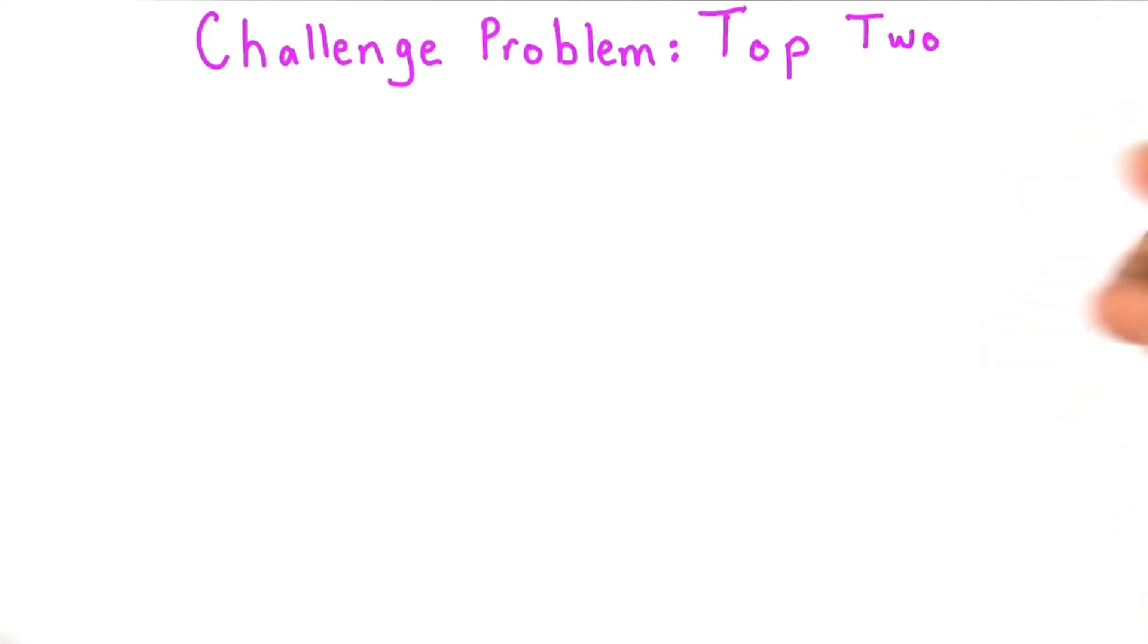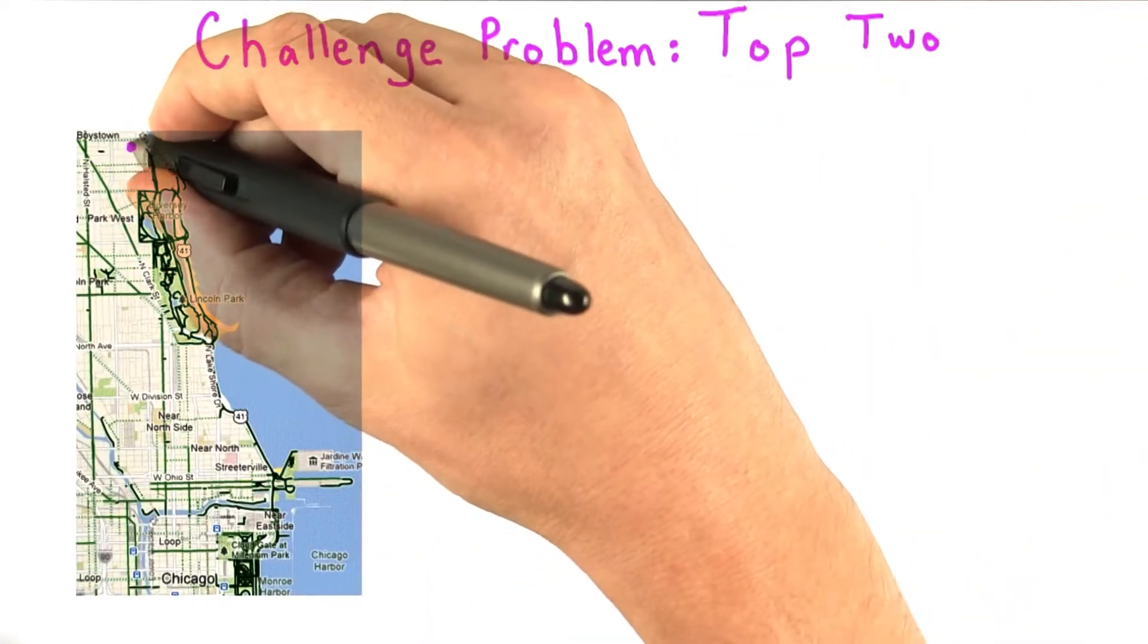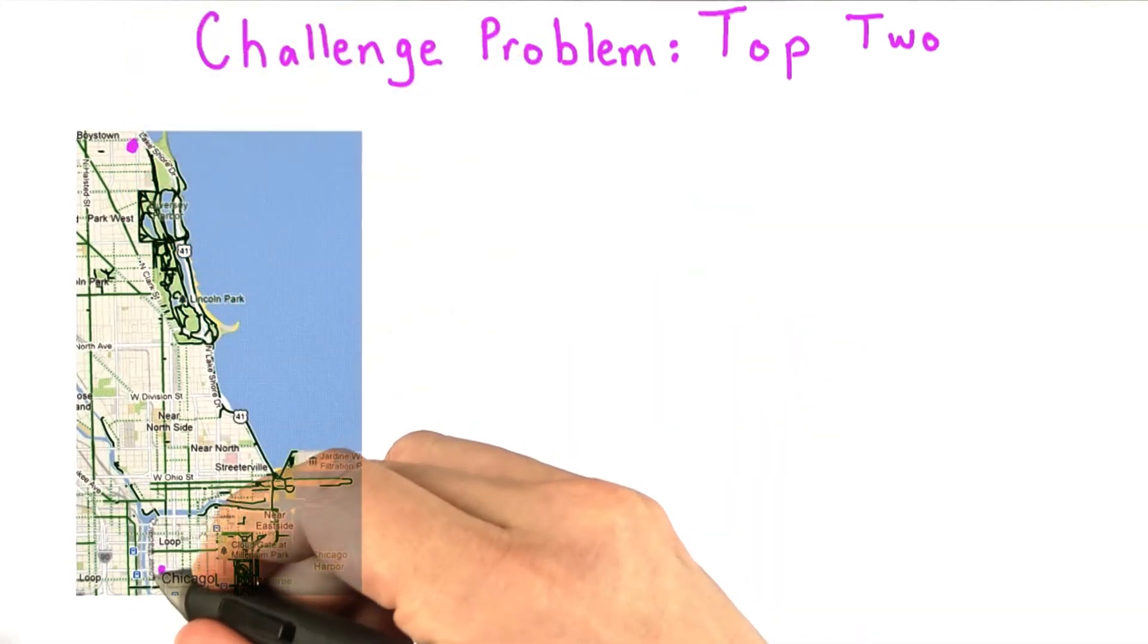Before we get to the first problem, I want to tell a quick story. I used to live in Chicago, and I wanted to bike from my apartment in Lakeview down to work in the loop.